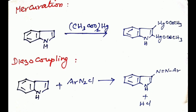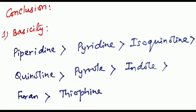Next reaction, mercuriation. Indole combined with diacetyl mercury gives 2,3 diacetyl mercury indole as a product. Then diazo coupling: indole reacts with benzene diazonium chloride to get 3-indole diazo product.